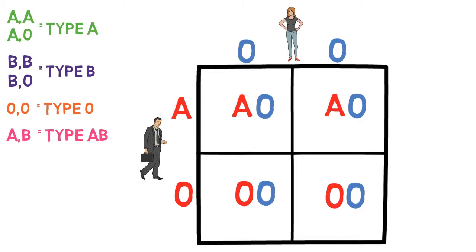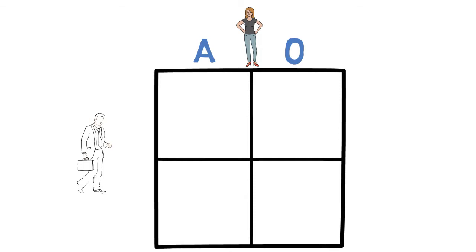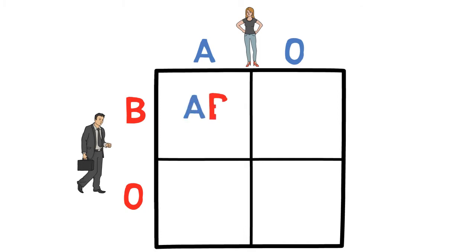Your siblings, of course, will have the same odds. Let's look at a more interesting example. Let's suppose that your mother was an AO blood type, while your father was a BO. In this case, you could become any of the four blood types, as you have a 25% chance to become an AB, an AO, a BO, or an OO.